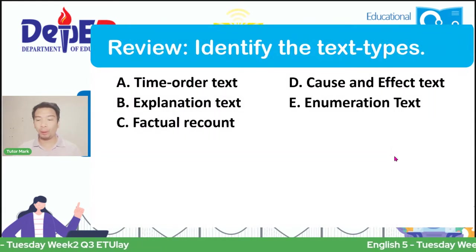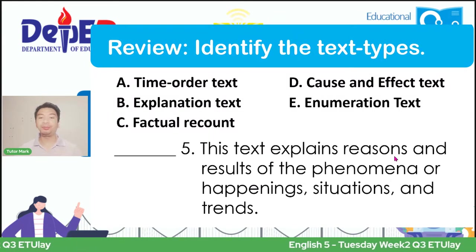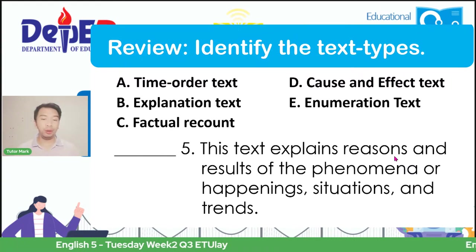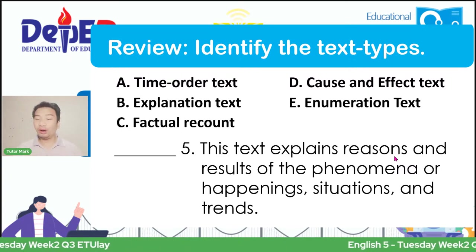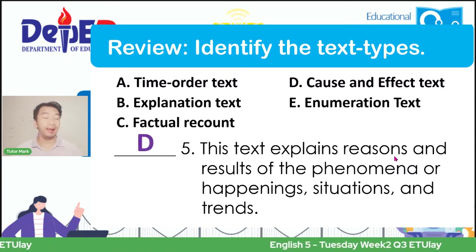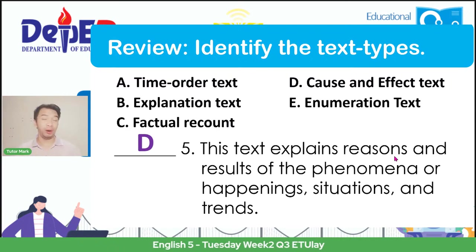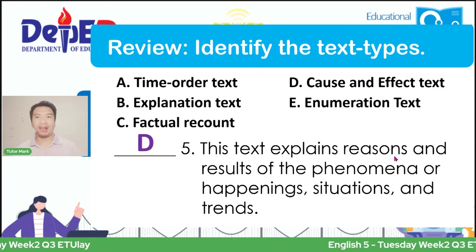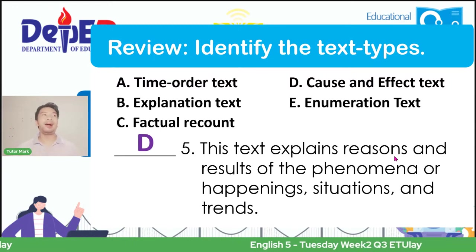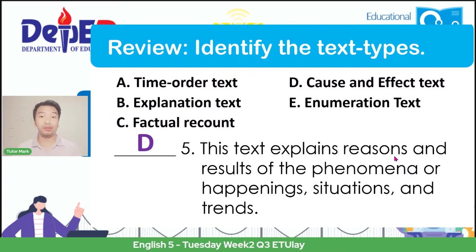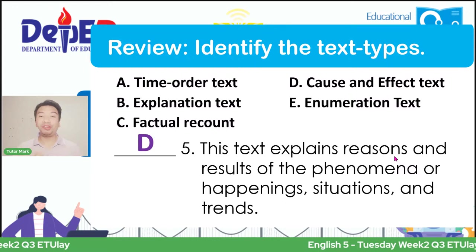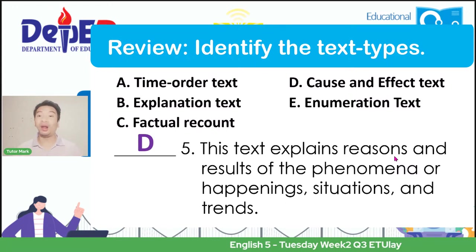And we move on to the last item for our review. Number five: this text explains reasons and results of phenomena or happenings, situations, and trends. If your answer for this item is letter D, cause and effect text, then you are correct. It tells us about events and why they happen—like why we have water pollution, why we have land pollution—and if it gives different sets of examples, then it is giving us a phenomenon or a happening. So it is a cause and effect text.